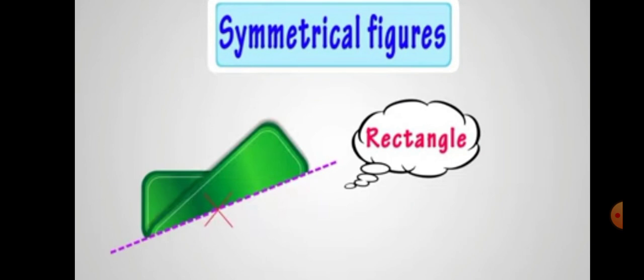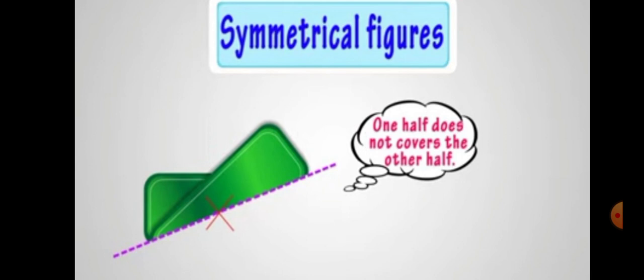Next, here we have a rectangle and here we have drawn this line of symmetry. Now we have to check whether it is right or wrong. So we have to fold it along this line. But one half does not completely cover the other half. So it means it is not a symmetrical figure.